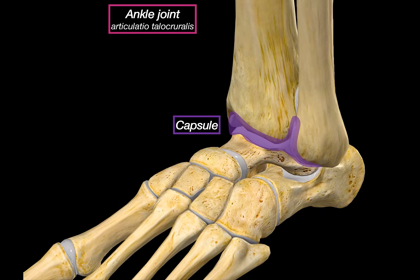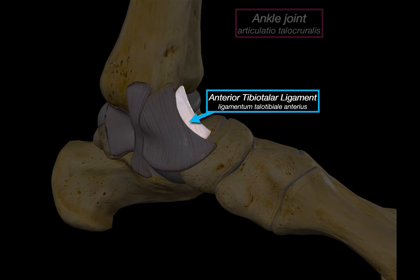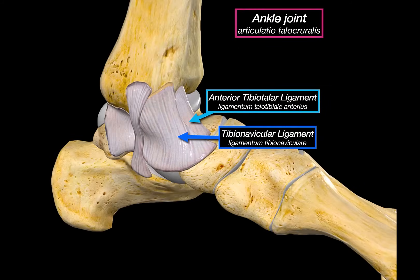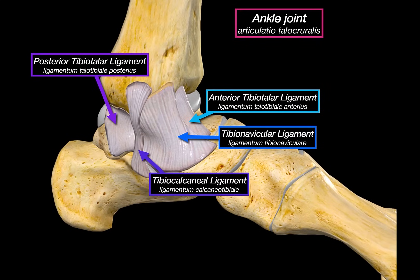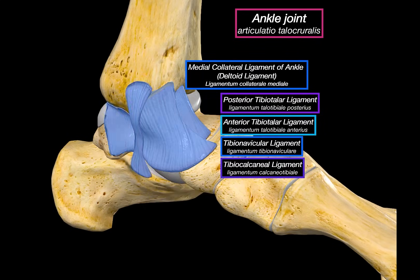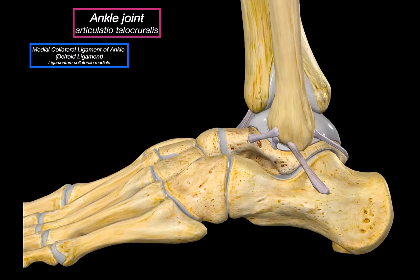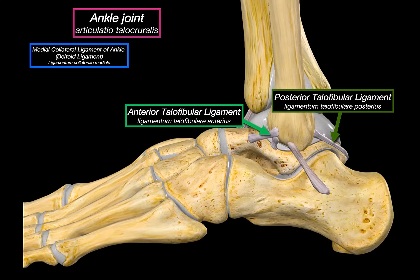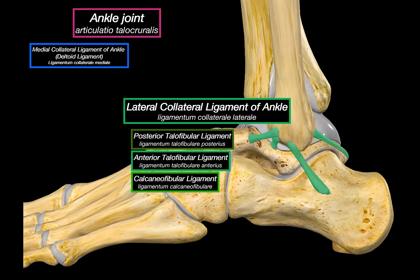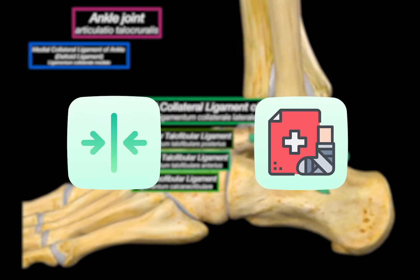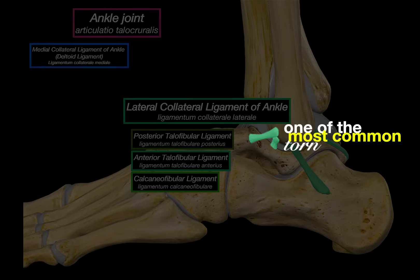The capsule alone is not enough for stability, so the joint is reinforced by a set of strong ligaments. On the medial side, we have four ligaments: the anterior tibiotalar ligament, the tibionavicular ligament going down to the navicular bone, the tibiocalcaneal ligament anchoring to the calcaneus, and the posterior tibiotalar ligament running from the back of the tibia to the talus. These four together form the medial collateral ligament of the ankle, or the deltoid ligament — a very strong triangular-shaped ligament that prevents excessive eversion, stopping the ankle from rolling too far inwards. On the lateral side, we have three ligaments: the anterior talofibular ligament in the front, the posterior talofibular ligament at the back, and the calcaneofibular ligament running downward between them. These three make up the lateral collateral ligament of the ankle. Compared to the deltoid ligament, these are thinner and more prone to injury, especially the anterior talofibular ligament, which is one of the most commonly torn in a typical ankle sprain.